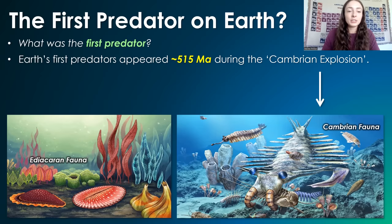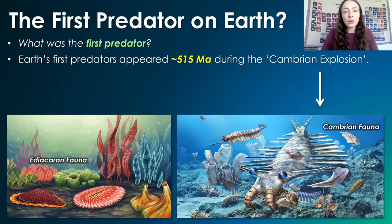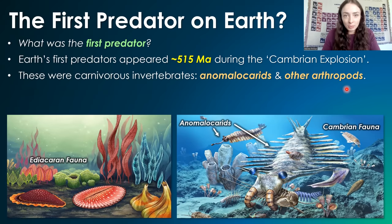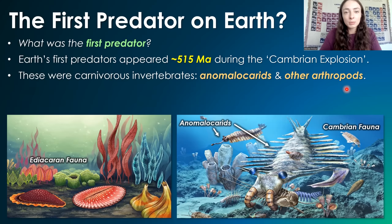Earth's very first predators, or at least the big scary apex predators in ecosystems, evolved around 515 million years ago within the time of the Cambrian explosion. These were carnivorous invertebrates called anomalocaridids. There were also other arthropod predators at the time, but anomalocaridids were the apex predators in Cambrian ecosystems.